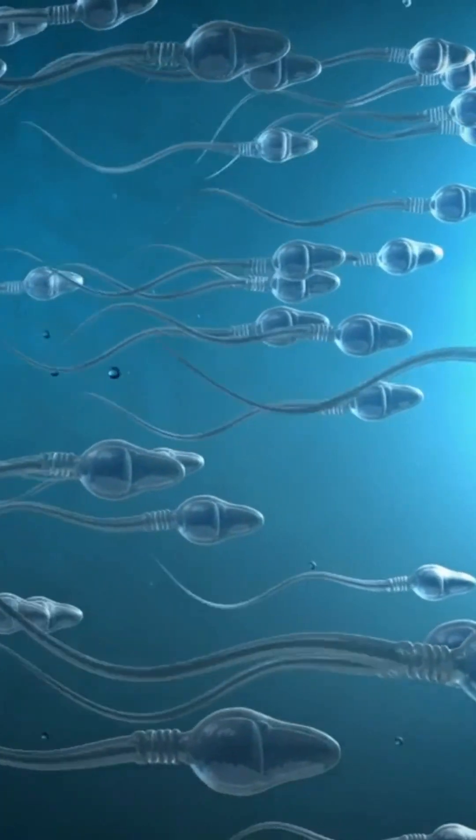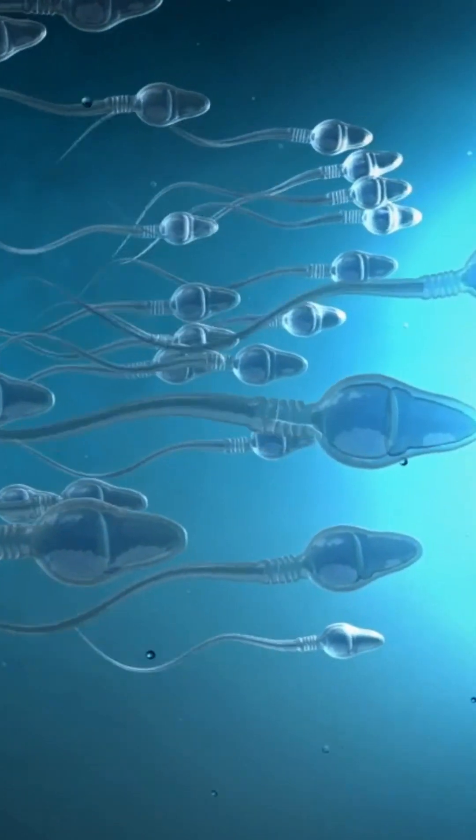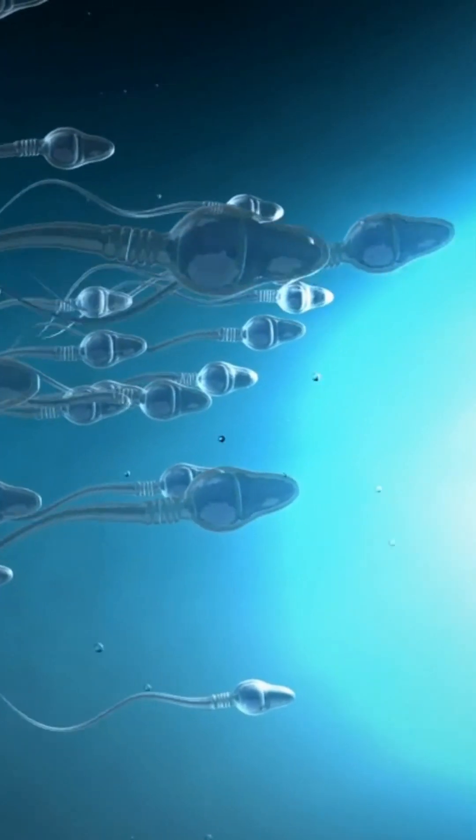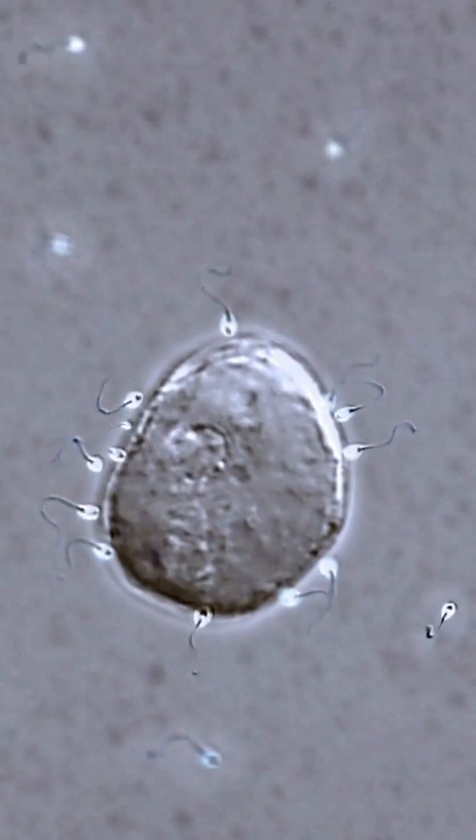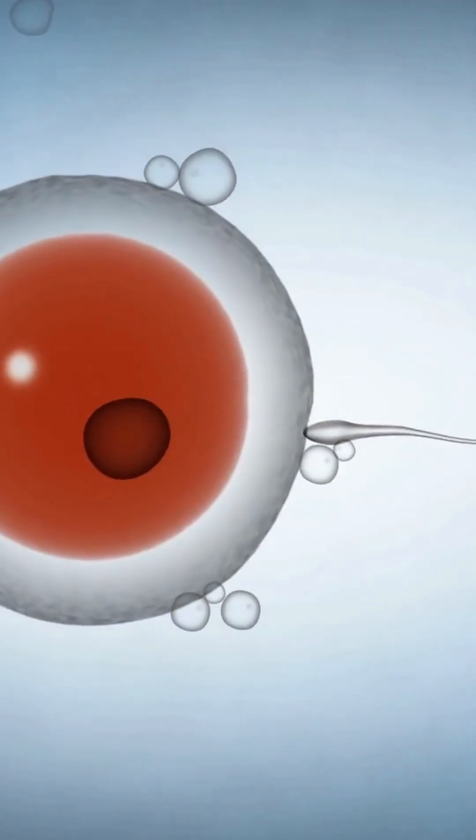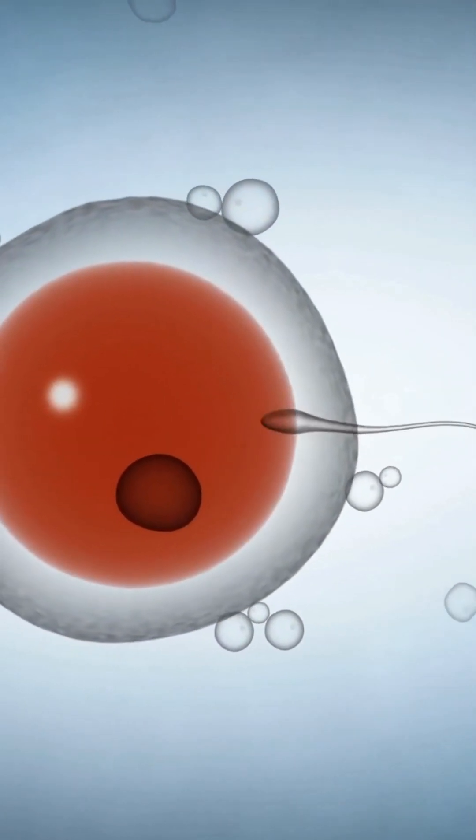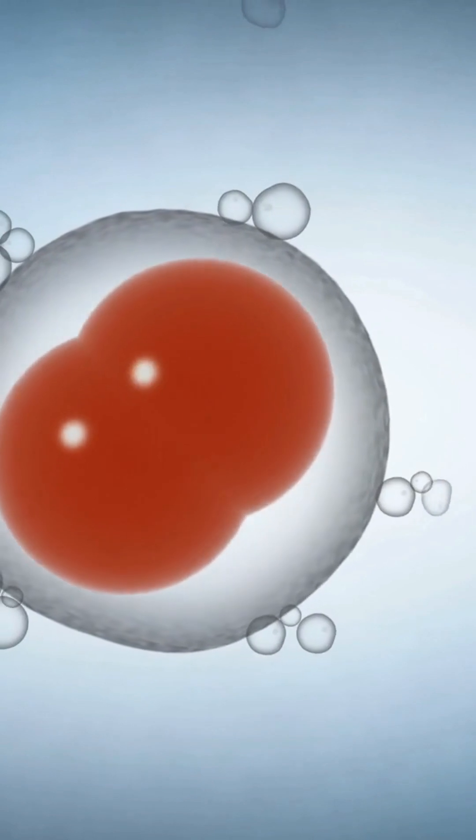This unique inheritance pattern stems from the fact that mitochondria in mammalian sperm are confined to the tail, utilized solely for propelling sperm cells during sexual reproduction. Consequently, the egg cell may lose or destroy the tail after fertilization.